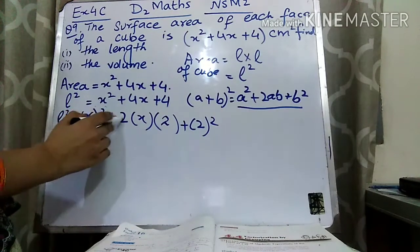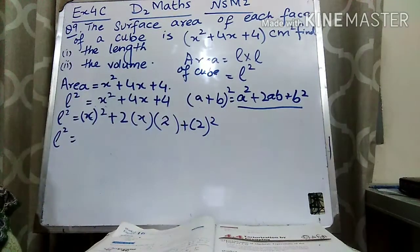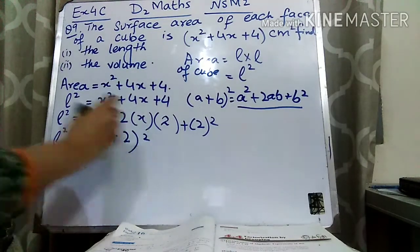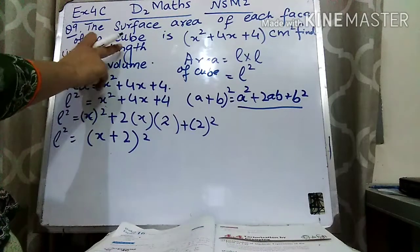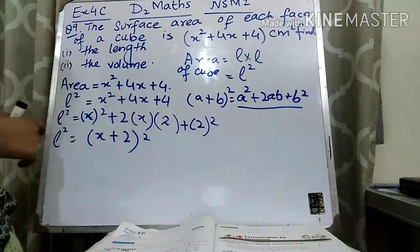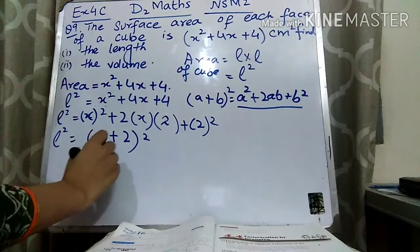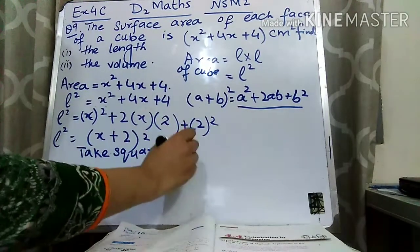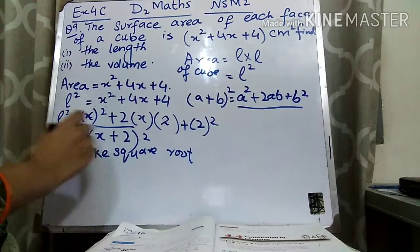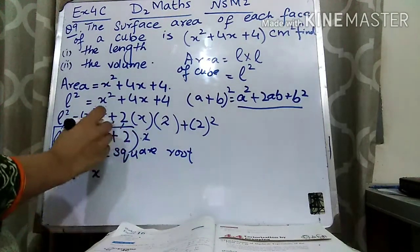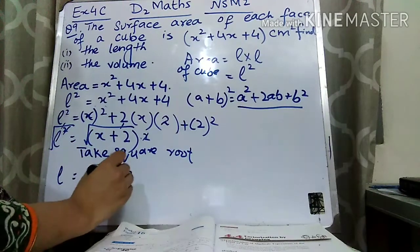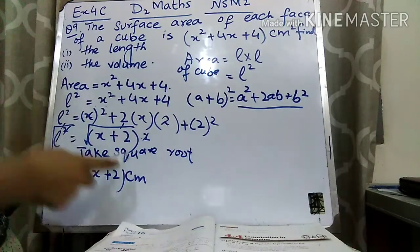So A² + 2AB + B² equals (A + B)². A is x and B is 2, so this equals (x + 2)². Now, since L² = (x + 2)² and we want L, we take the square root. Square root and square cancel each other, so L = x + 2. Therefore the length is x + 2 centimeters.